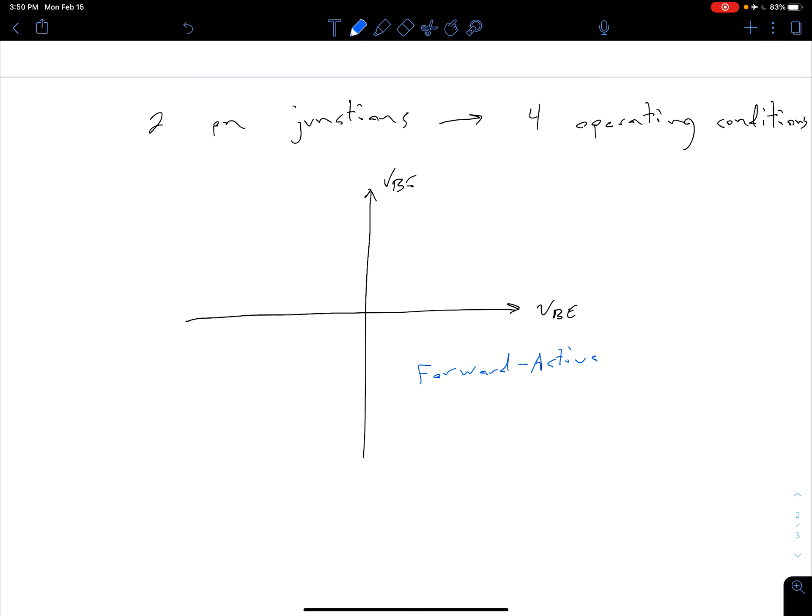Another combination we're going to deal with later is saturation, when both junctions are forward biased. As you might imagine, if both junctions are reverse biased, the device is essentially off, so we call this mode cutoff. This fourth mode is the inverse of our forward active mode, so we call this inverse active mode.